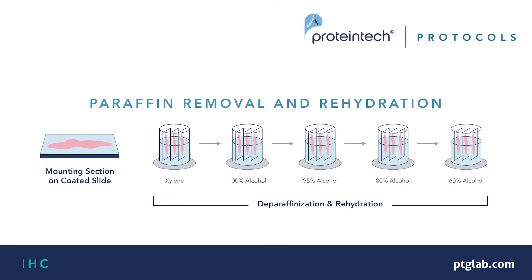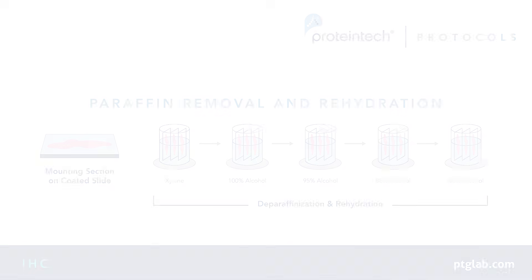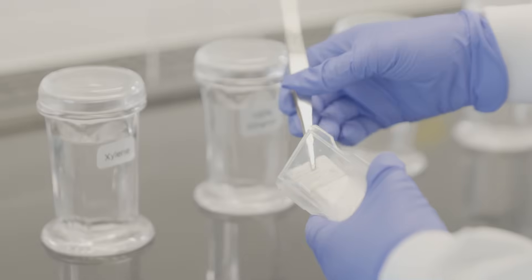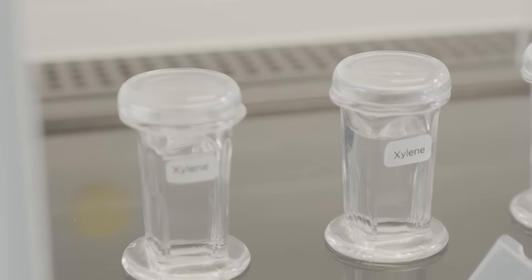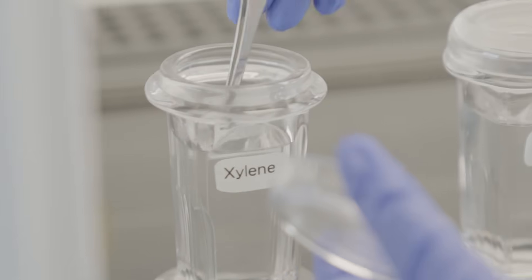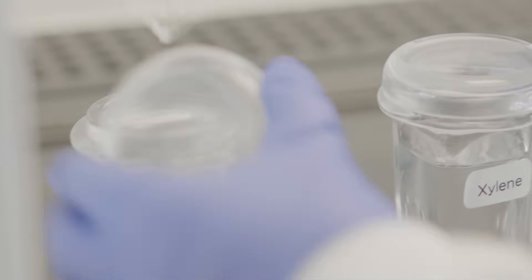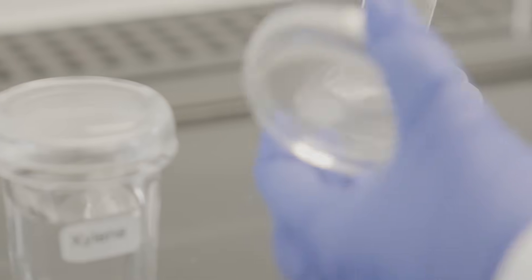Before staining can commence, the wax coating needs to be removed and slides need to be rehydrated. Start by immersing slides in xylene for 10 minutes. Transfer slides to fresh xylene for a further 10 minutes.